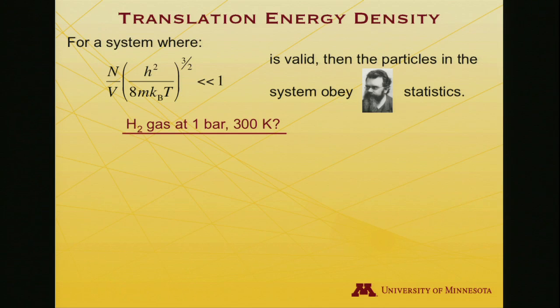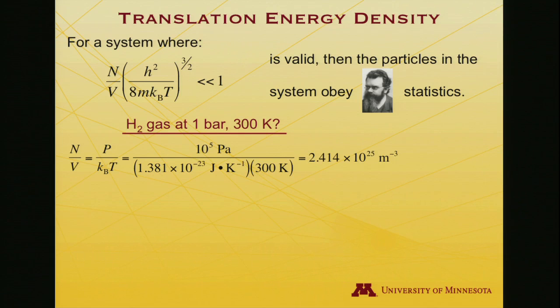Let's just explore how often that might happen, that this inequality is satisfied, and let's just take a simple system, molecular hydrogen as a gas at 1 bar pressure and 300 Kelvin. So, under those conditions, we can replace n over V using the ideal gas equation of state as p over kT.